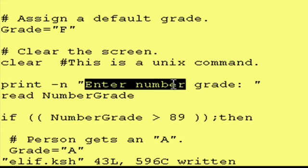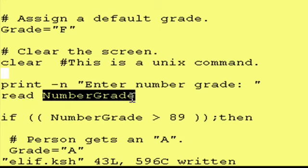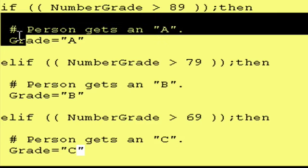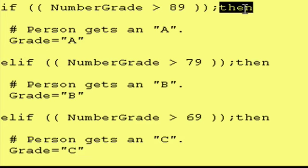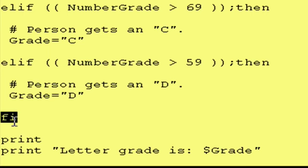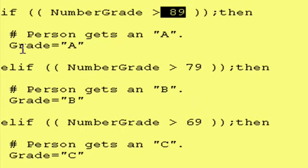So we prompt the user to enter a number grade, and we do that with the print-n, which is no carriage return at the end of the print statement, and we read it into number grade. Now, let's test if the number grade is greater than 89. Then we execute this block of code right here from the then to this else if, the E-L-I-F. So if it is greater than 89%, then the person gets an A, and we assign A to the variable grade, overriding the F.